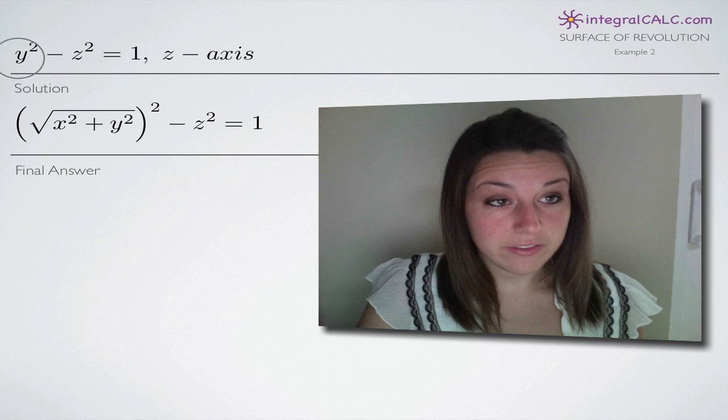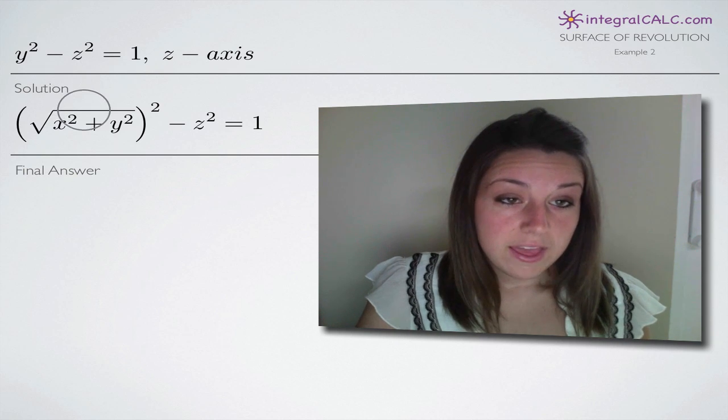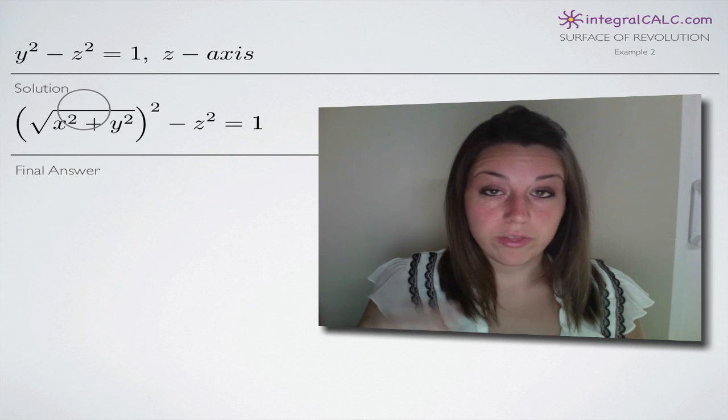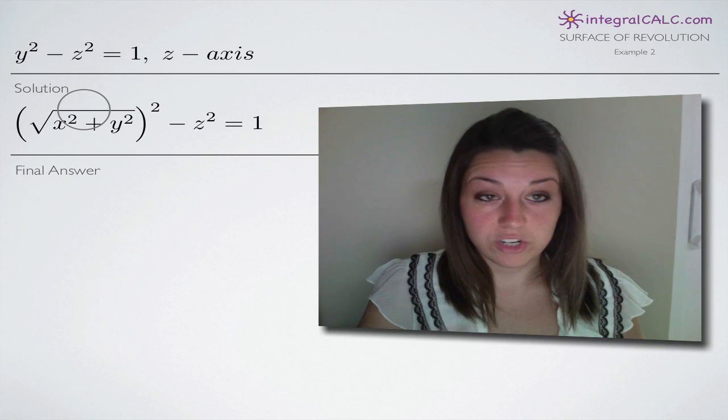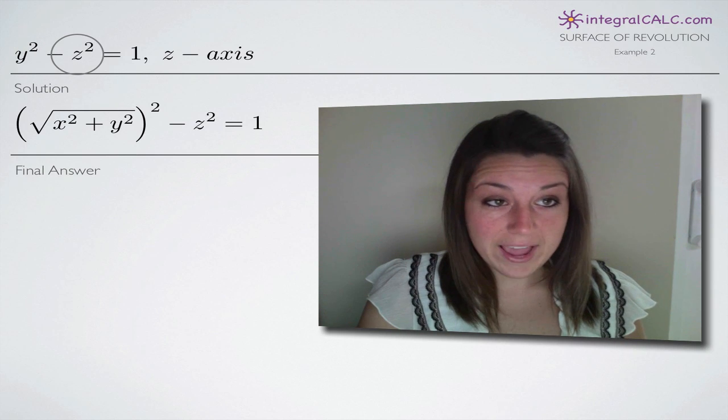So in this case, what we need to do to change the y variable is you're always going to want to end up with all three variables in your solution: x, y, and z. In our case, you can see we already have both y and z.